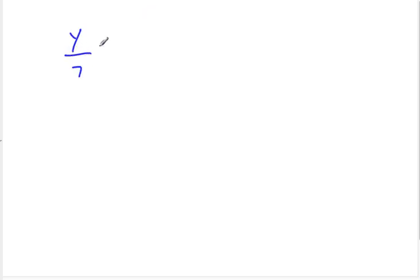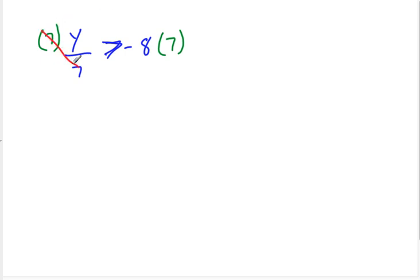We can also have division. If I have y divided by 7 is greater than negative 8, to solve that I need to multiply both sides by 7. That cancels the 7s, and we get y is greater than negative 56.